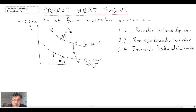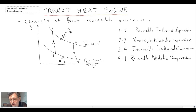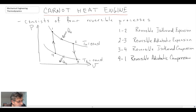The final component to make it a cycle for the Carnot heat engine is a reversible adiabatic compression taking us from state four up to state one. With this compression process the gas is getting hotter — it's adiabatic — so the temperature of the working fluid is increasing, which is why we go from isotherm T-low up to isotherm T-high. Those are the four components of the Carnot heat engine cycle.